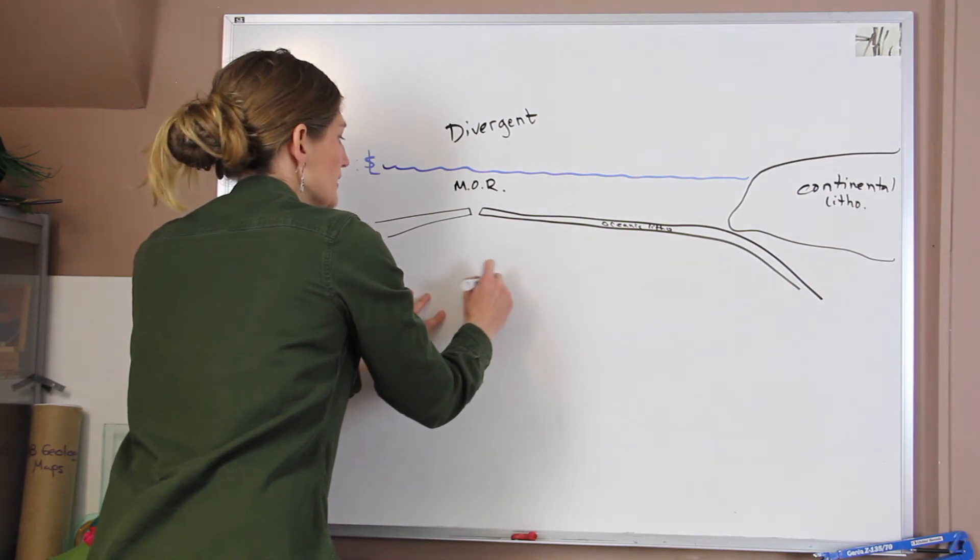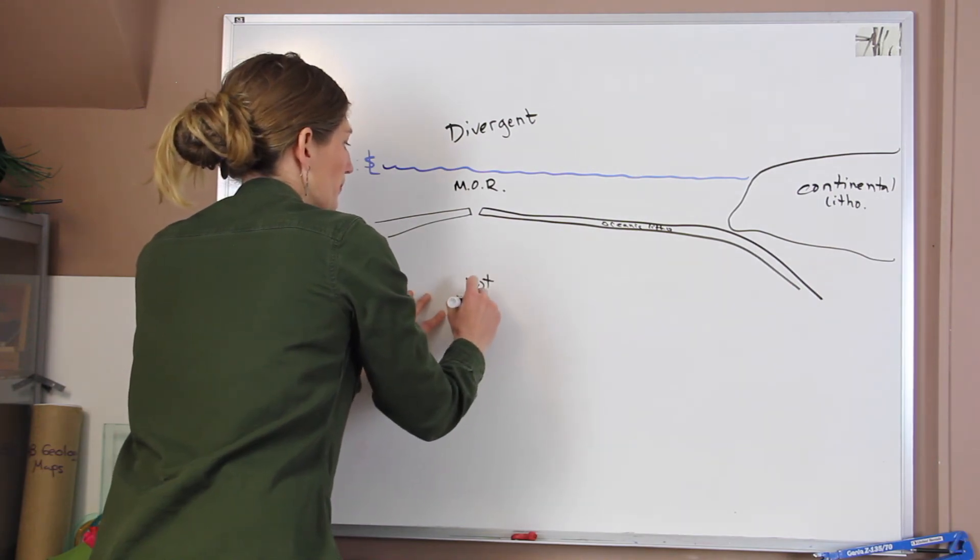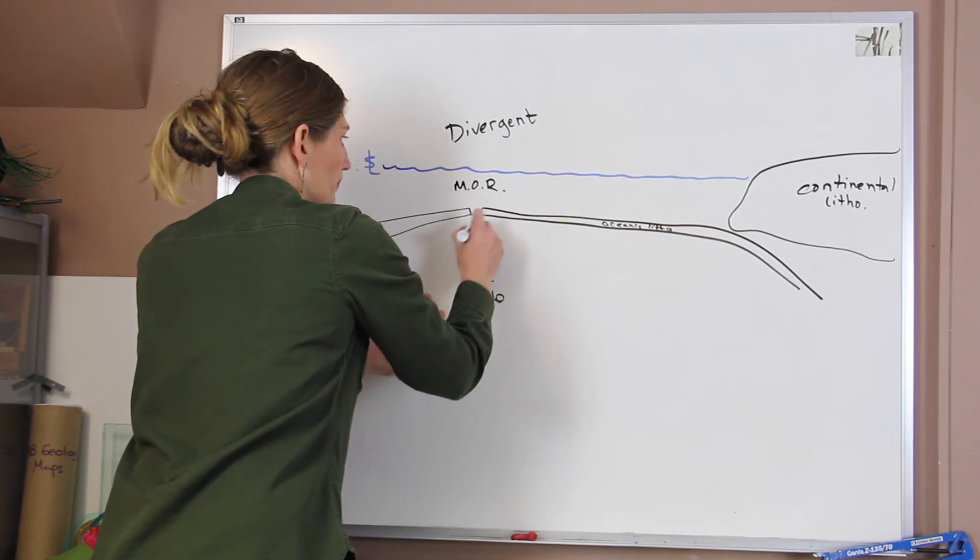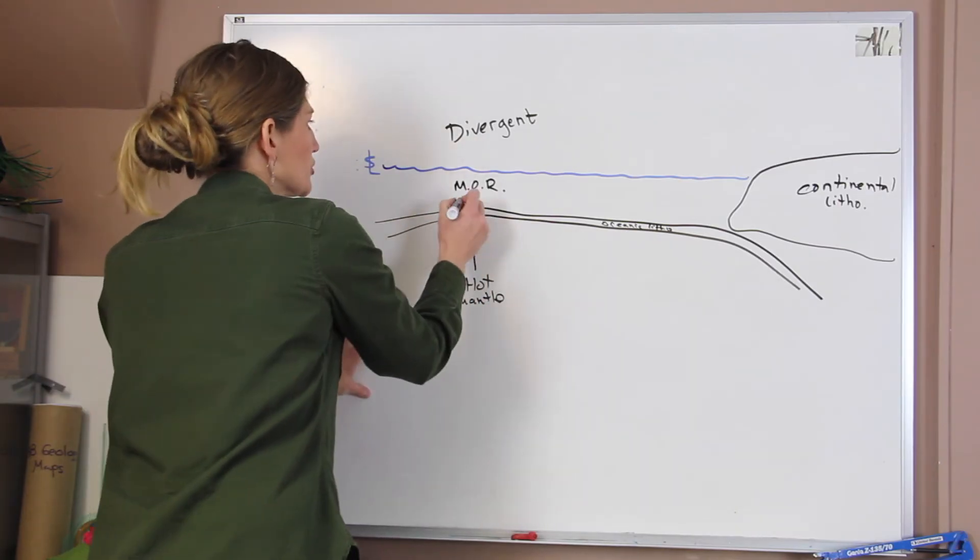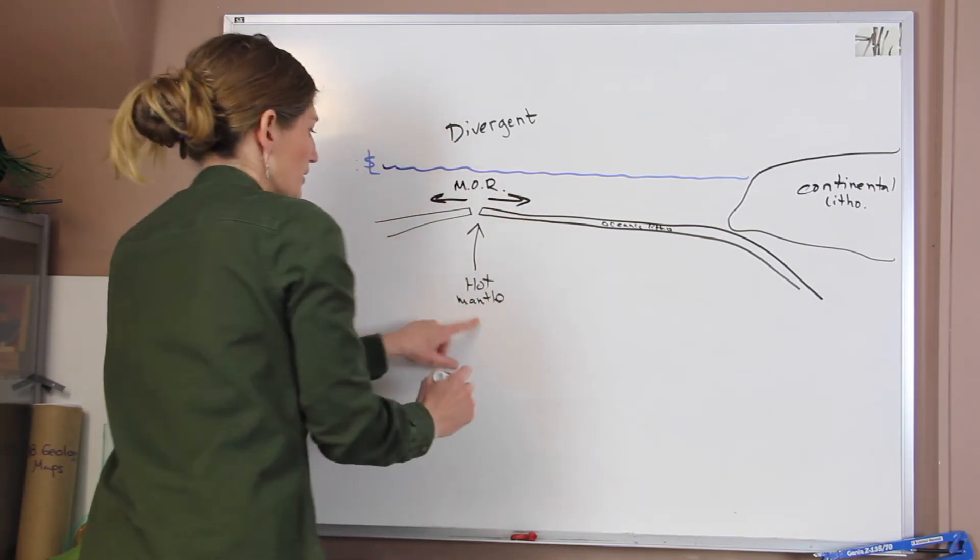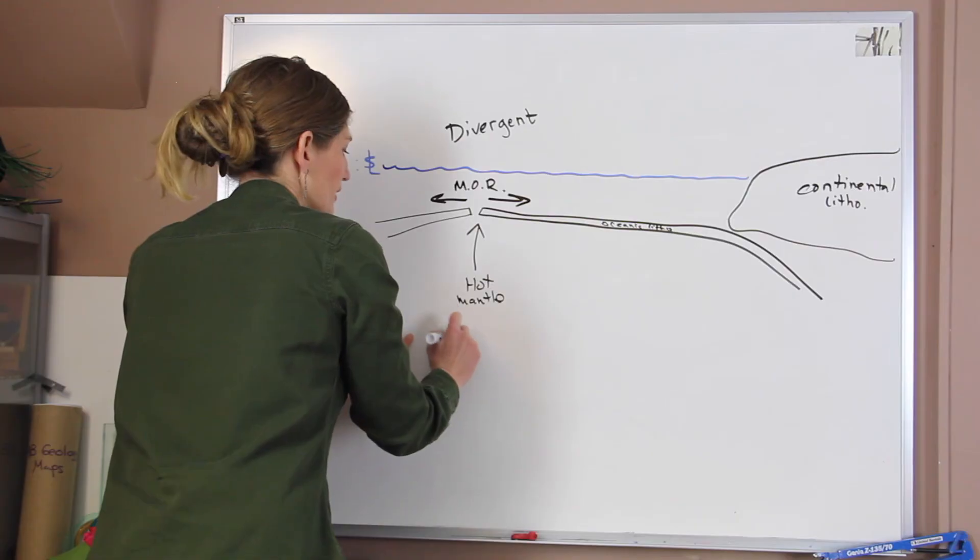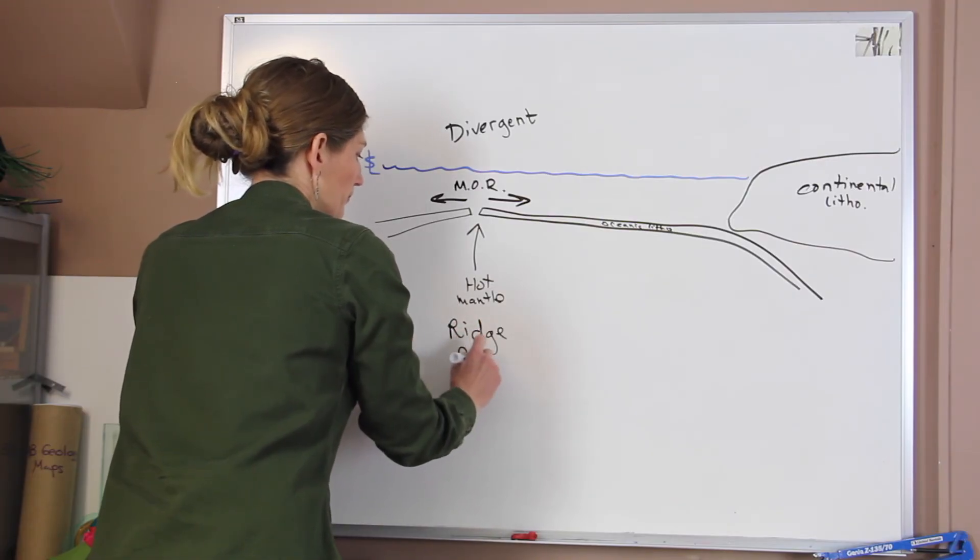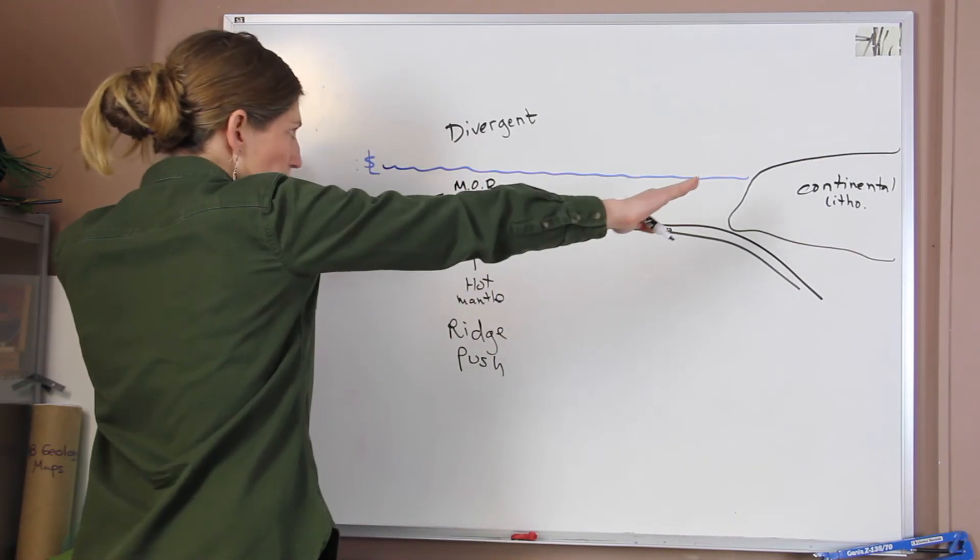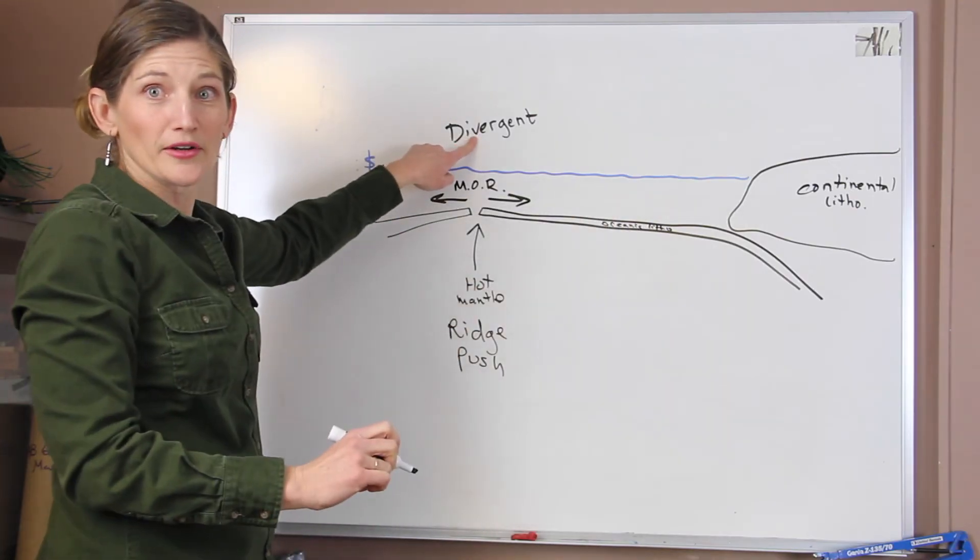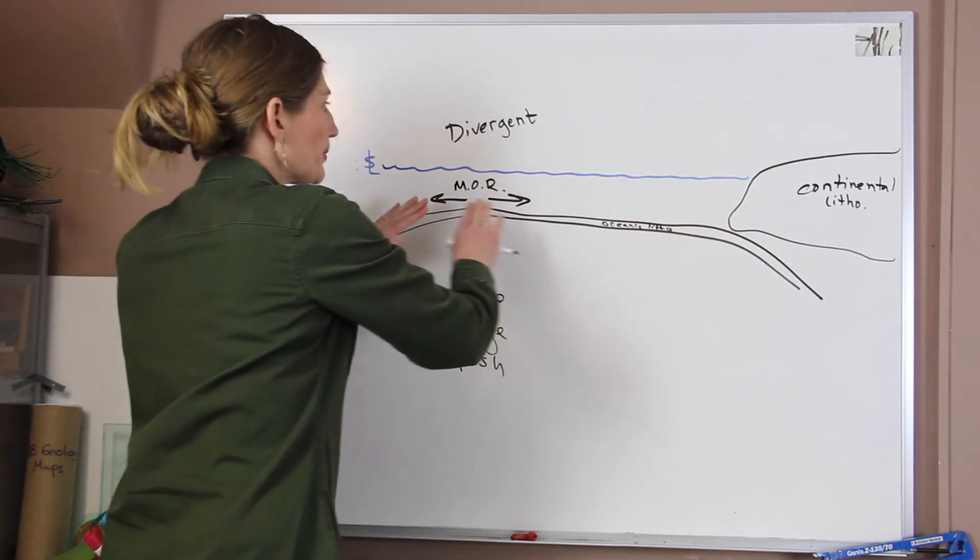Okay, so here at our mid oceanic ridge, this is a divergent boundary. We have our hot asthenosphere rising up. And that's going to push these two plates apart. So this is our example where we have ridge push. So the plates push them apart. That is at our divergent boundary.